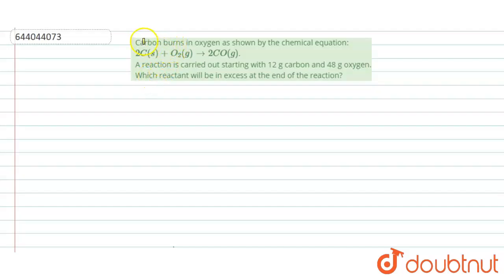The question says, carbon burns in oxygen as shown by the chemical equation: 2C plus O2 gives 2CO. A reaction is carried out starting with 12 gram carbon and 48 gram oxygen. Which reactant will be in excess at the end of the reaction?